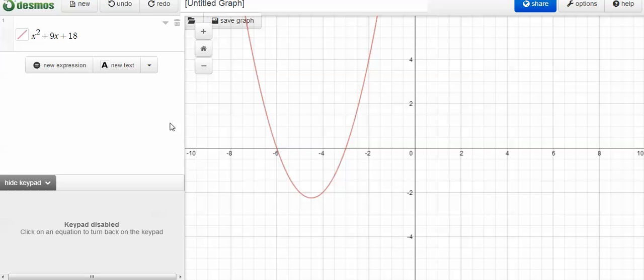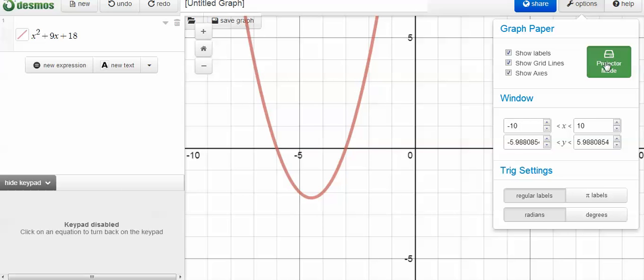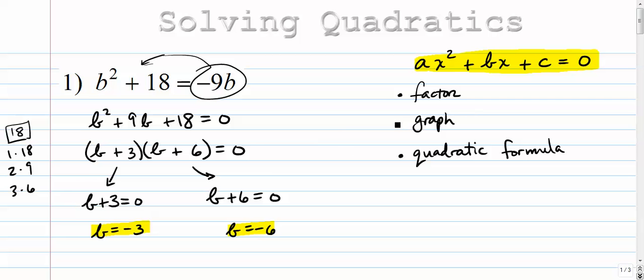If I plug that into my calculator here, I can see that, in fact, it does cross at negative 6 and negative 3. All right, those are really important points. And in this case, they're what we call the solutions or the zeros. So if I want to make it a little bit easier to see here, again, negative 6 and negative 3. So those are real solutions to our graph.